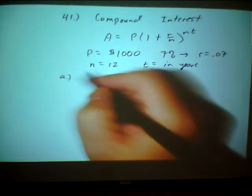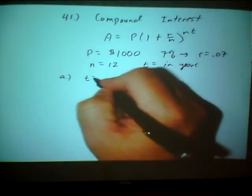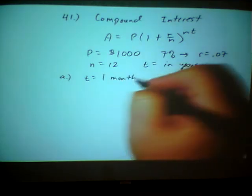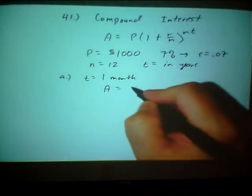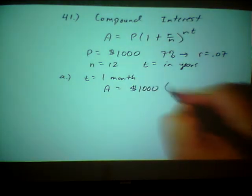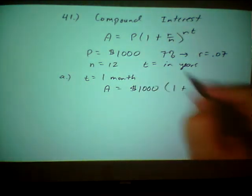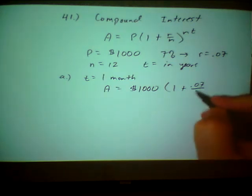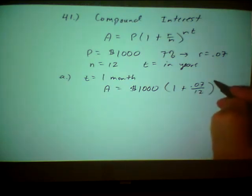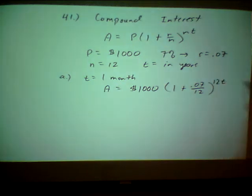So for part A, they're saying, how much money do you make after one month? So here's my basic equation. A equals, my principal is $1,000, that's P, times, in parentheses, 1 plus R is 0.07. For now, N is 12, and then Nt is 12, and for now, I'll just leave it as T. So basically, now I'm going to plug in a number for T, and then I can calculate the amount of money I will have in the bank.